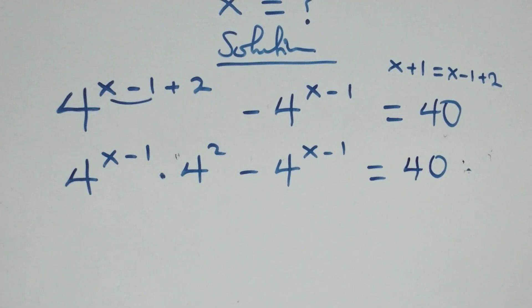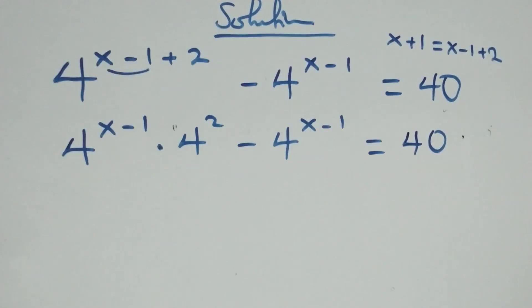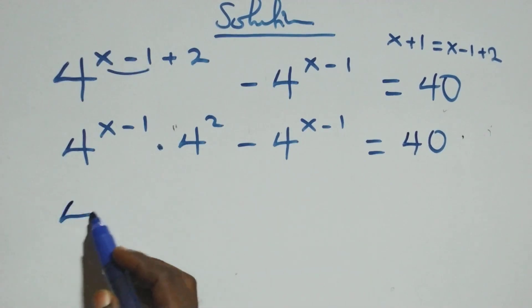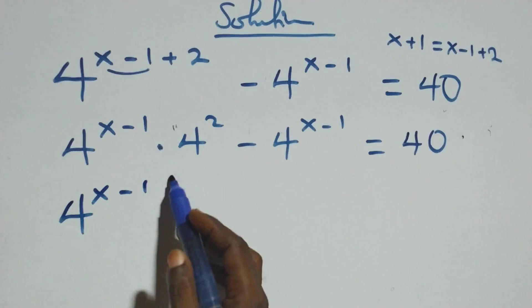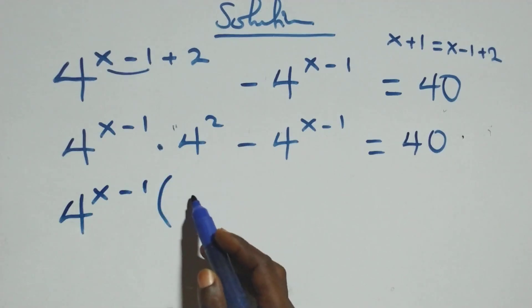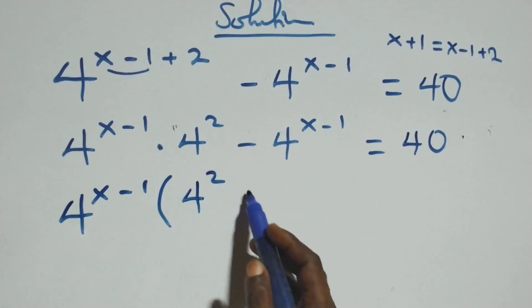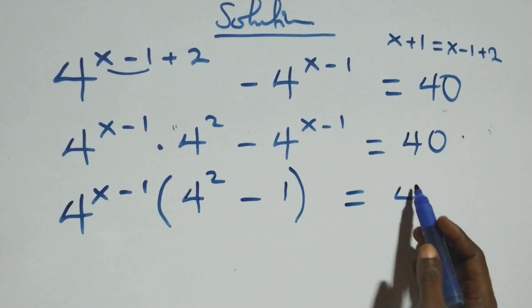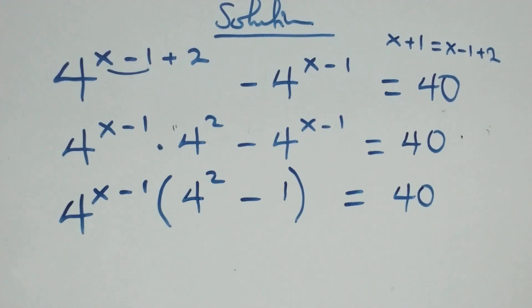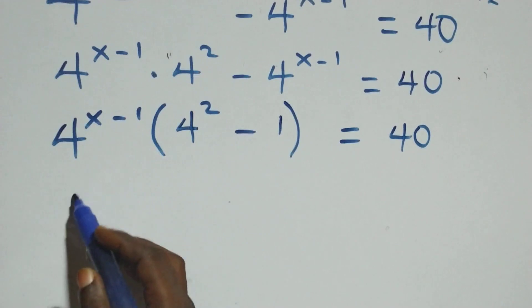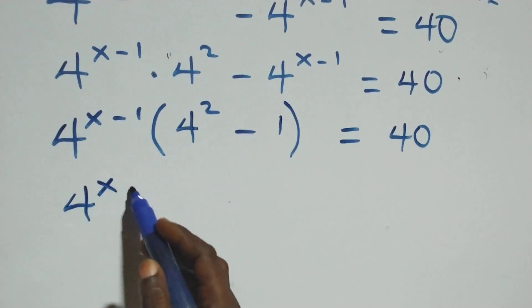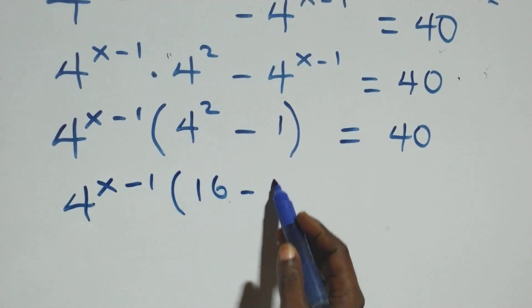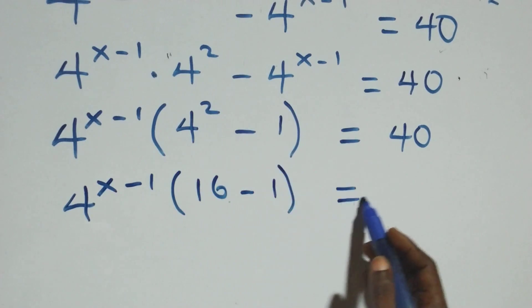Next, we factor out 4^(x-1): we get 4^(x-1) times (4^2 minus 1), which equals 40. That is, 4^(x-1) times (16 minus 1), equals 40.